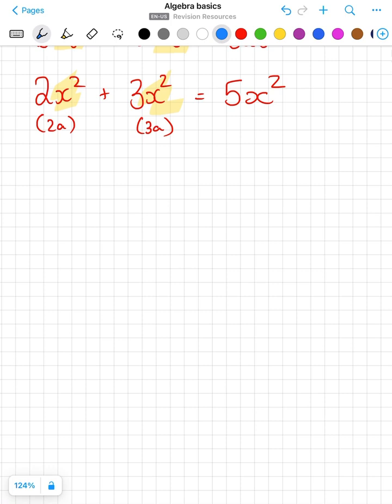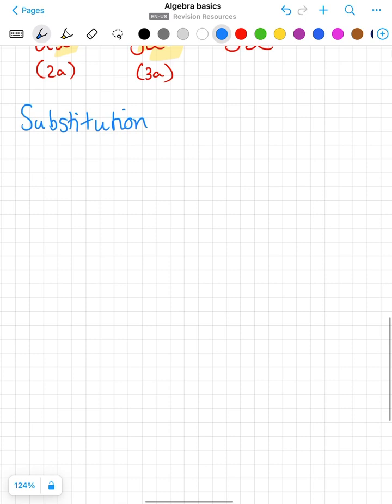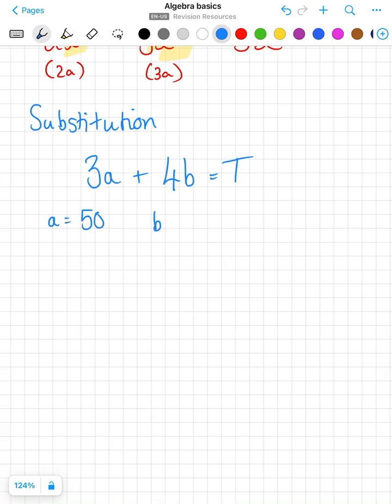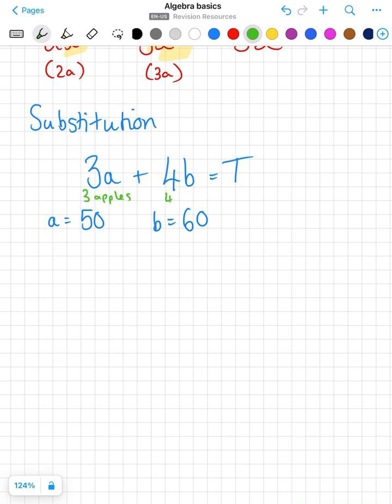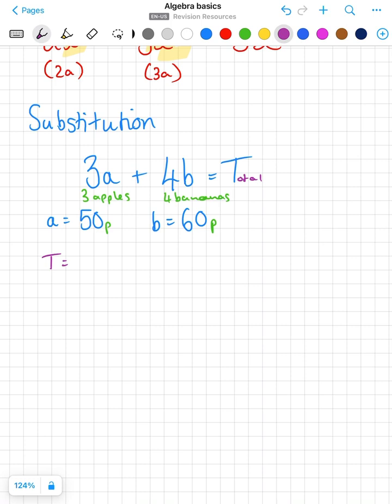So that's collecting like terms, let's now look at some substitution. So if I have 3a plus 4b equals t and a equals 50 and b equals 60, let's imagine this in real words: I buy 3 apples and 4 bananas and the cost of each apple is 50 pence and the cost of each banana is 60 pence, work out the total cost.